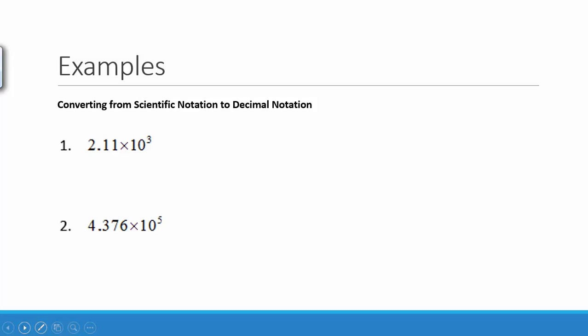For this example we have 2.11 times 10 to the 3rd power. We are going to move the decimal point 3 places. A power of 3 on a 10 is going to make this number a lot bigger, so that makes sense that we move the decimal place to the right 3 places. We need to put a 0 in that place to hold the 3rd place, so this is equal to 2,110.